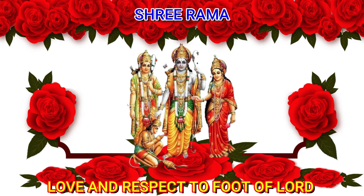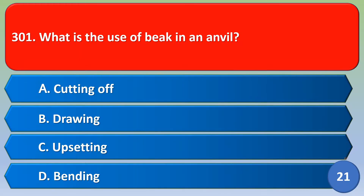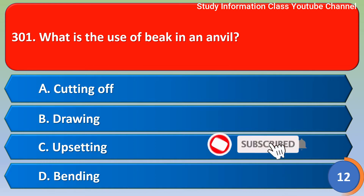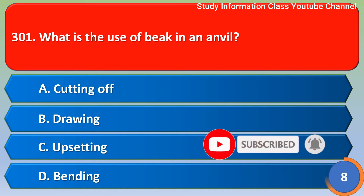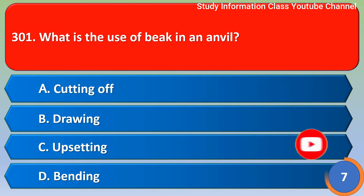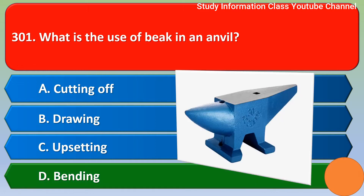Namaste. Sri Rama - what is the use of bit in an anvil? Option A: cutting off option, Option B: drawing option, Option C: upsetting option, Option D: bending. The correct answer is Option D, bending. Option D is the right answer.